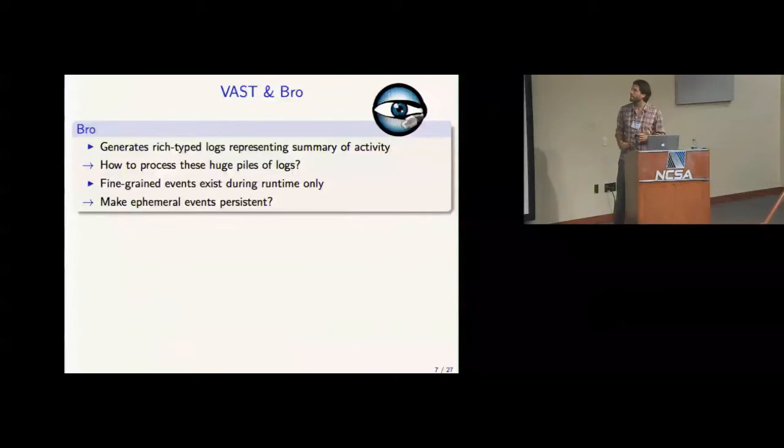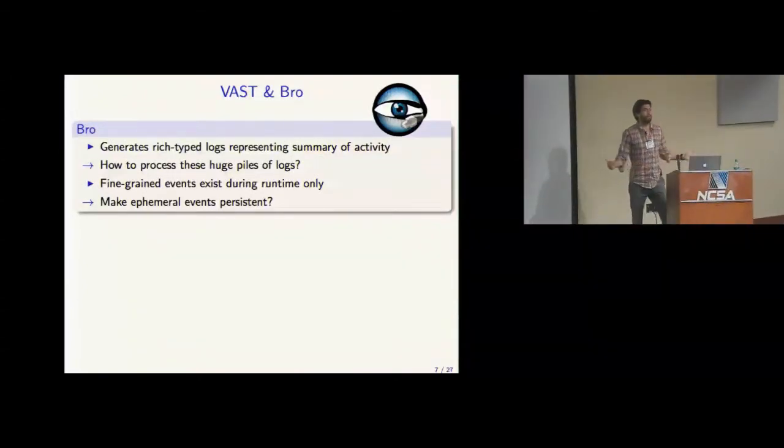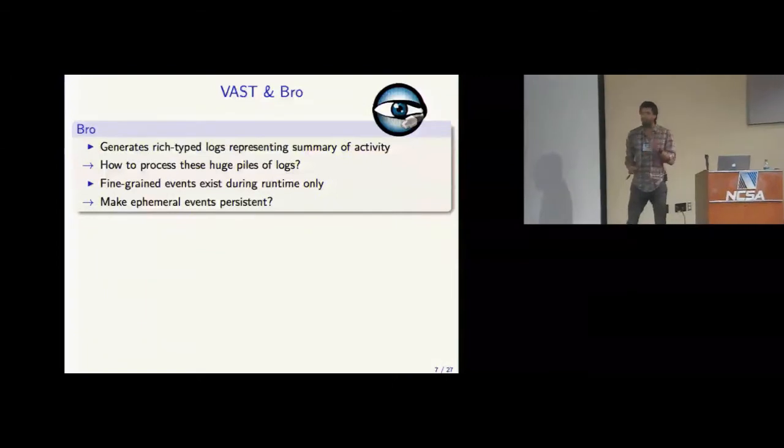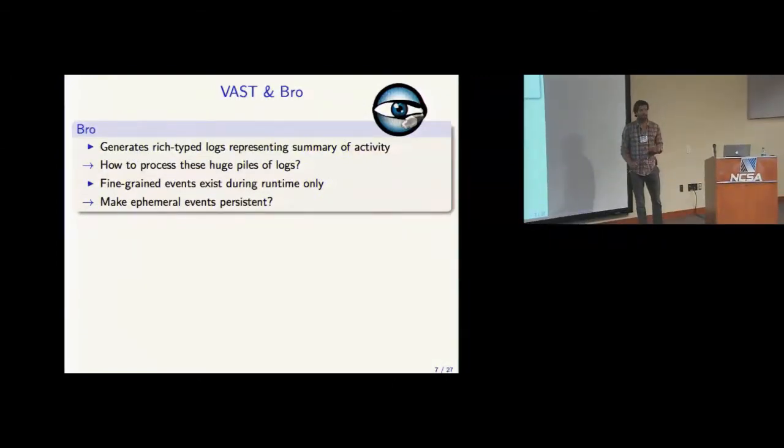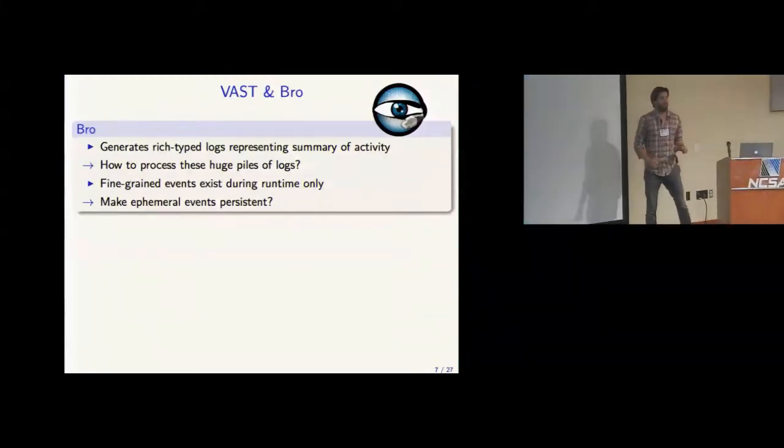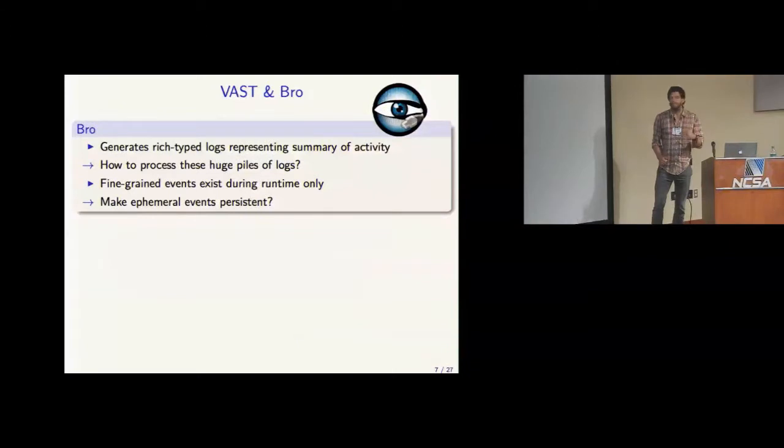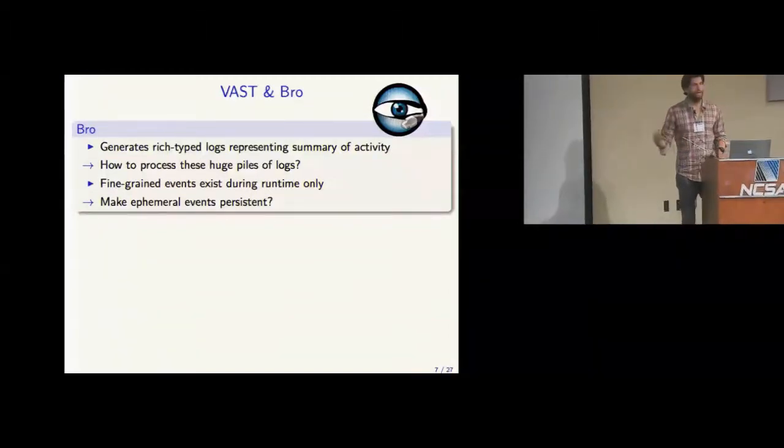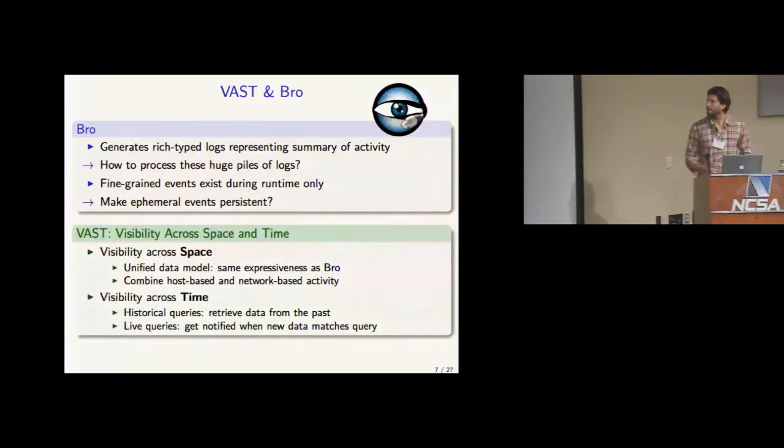And how does it relate to Bro? Really, I mean, I'm preaching to the choir here. You have all these logs, and you don't know what to do with them. And maybe you even want more than just logs. Also, some fine-grained activities that exist only in certain applications while they're run. Like, in Bro itself, you have the HTTP header events, and by default, Bro does not print them out. But let's say if you wanted to take all these events and search them, then VAST would, for example, be a candidate to get all this data.